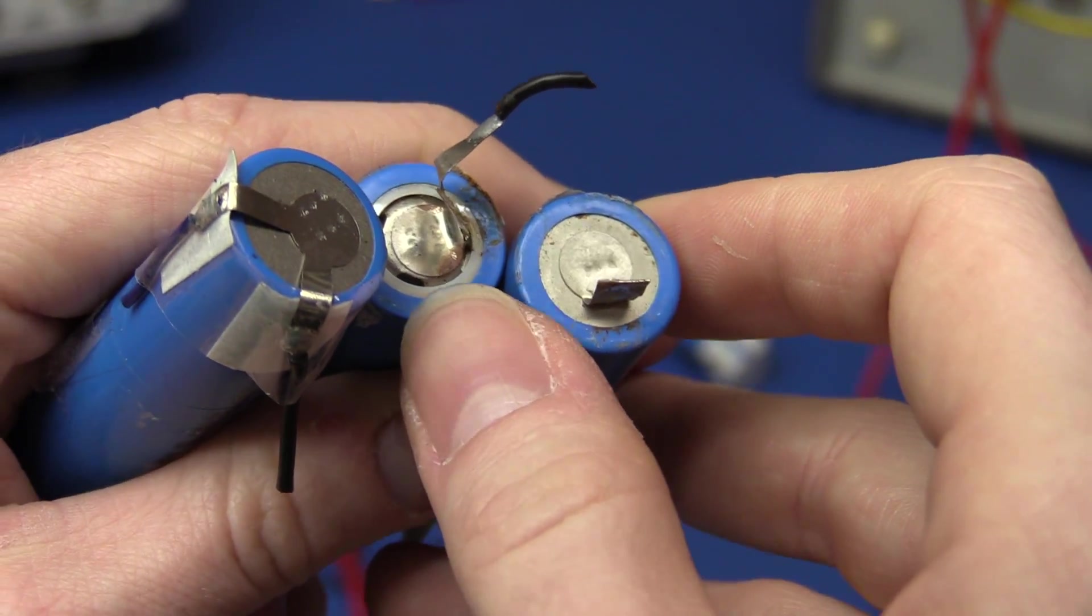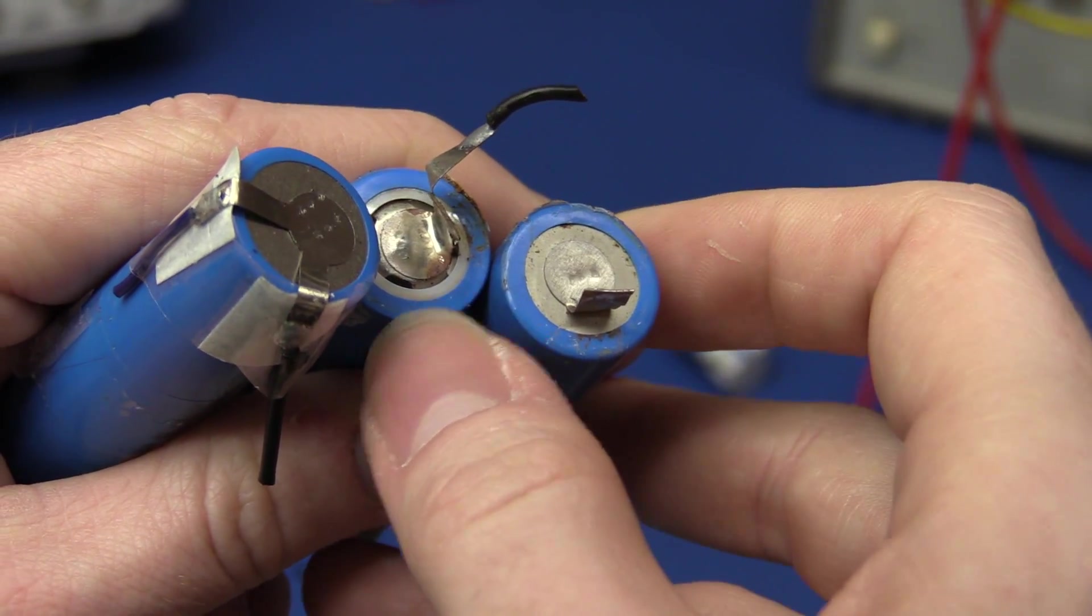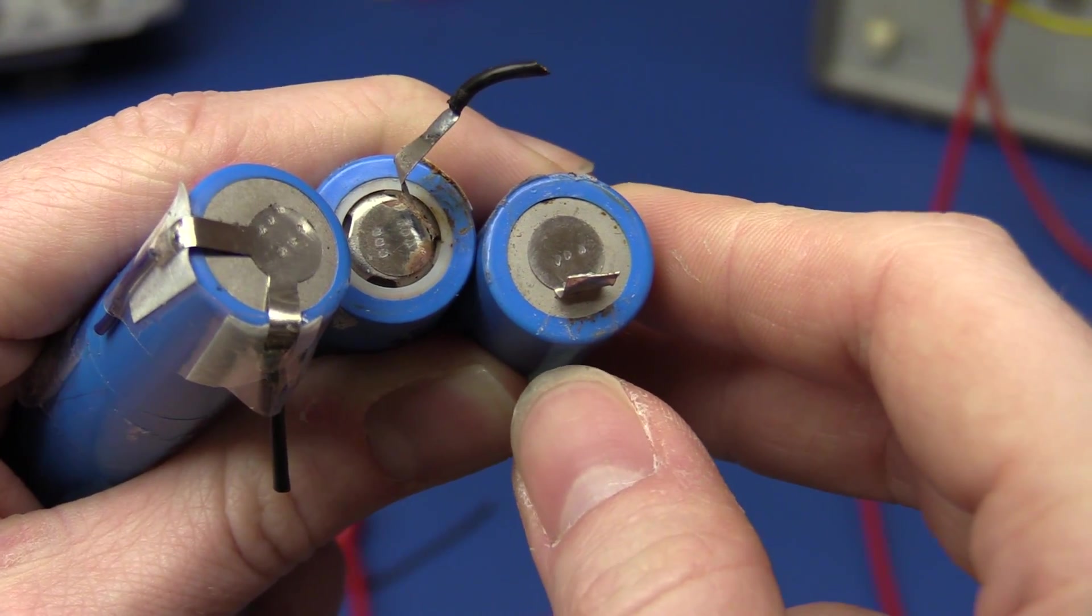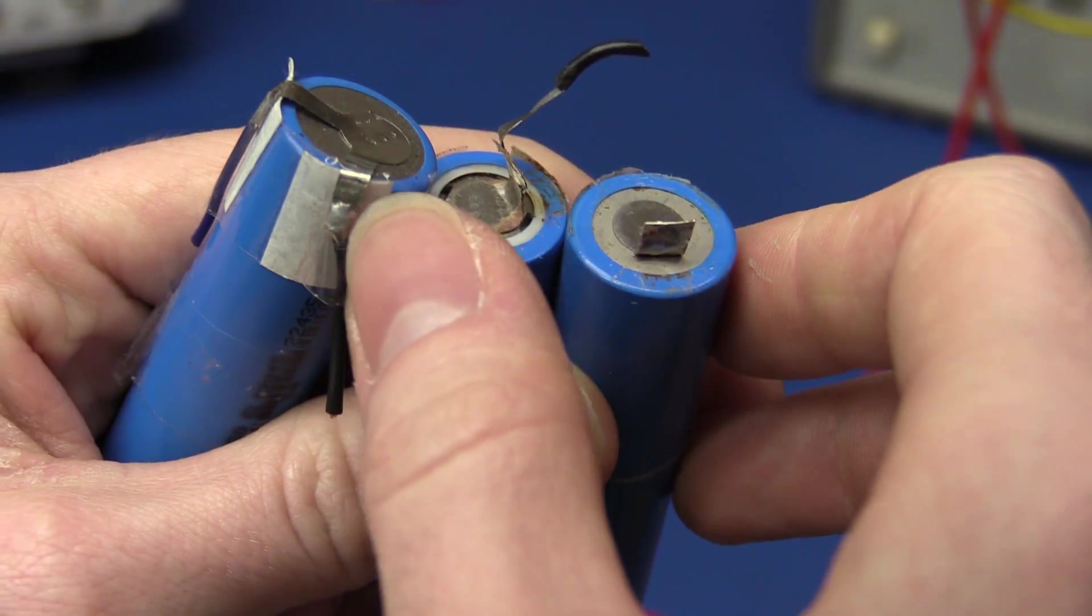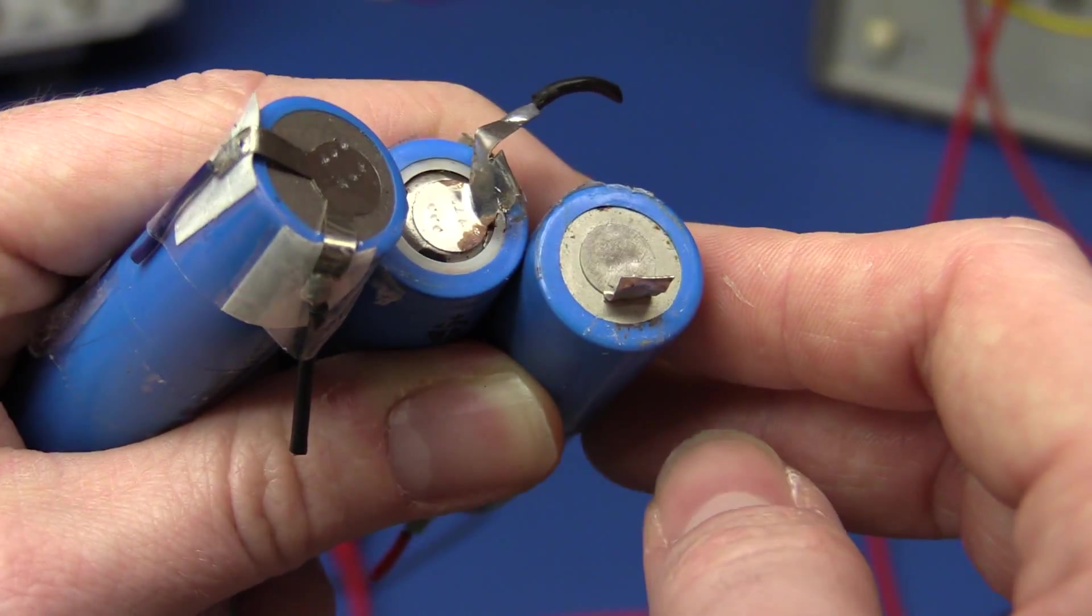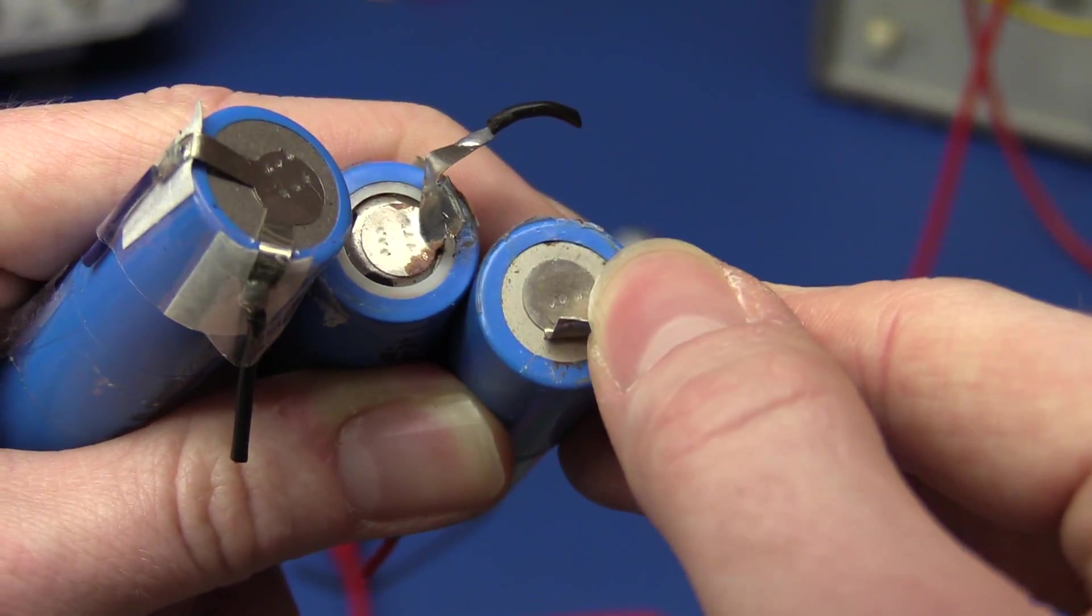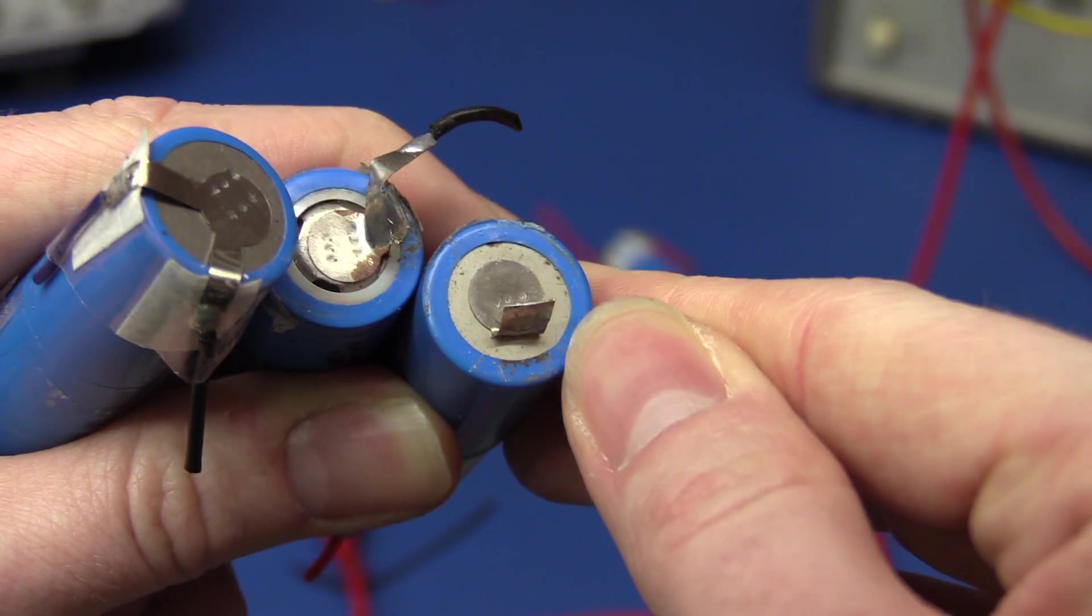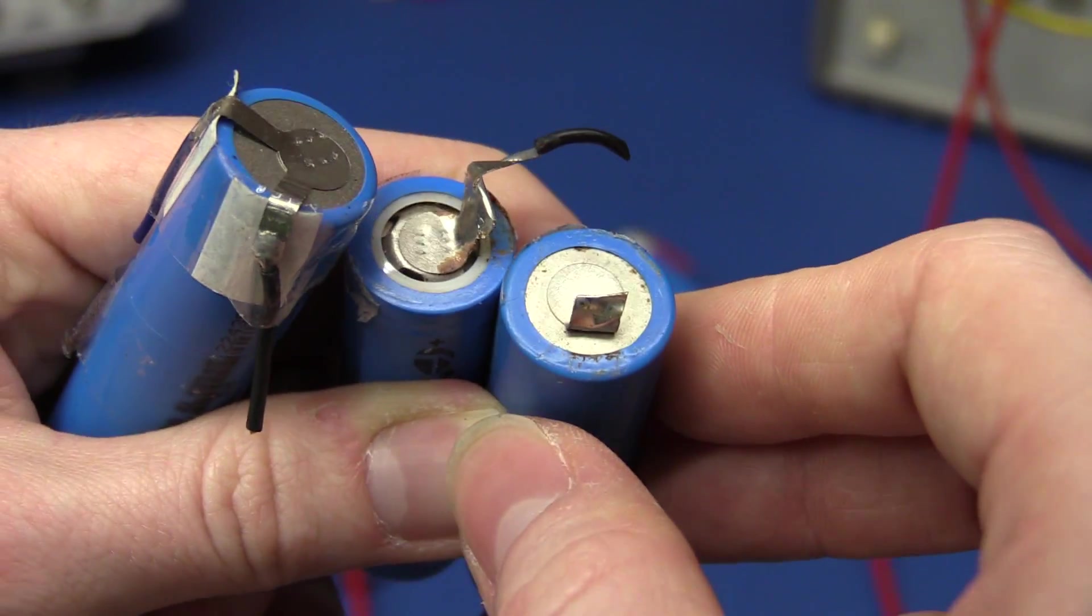I can see now that the corrosion is not only on this single battery. There's also a bit of corrosion on some of the other batteries. So I think it's just these steel connections that have rusted and it's got onto the batteries. It could be because of the solder flux or something like that.